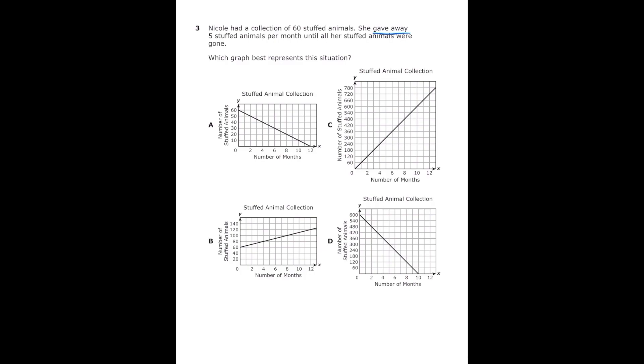Our correct answer should have a line that starts at 60. Letter A starts at 60 and it's decreasing from left to right, so I'm going to put a check. Letter B starts at 60 but it's increasing, so that's not going to work. Letter C is starting at 0, so that's obviously not it. And letter D is starting at 600 which is obviously not correct. So our correct answer is letter A.